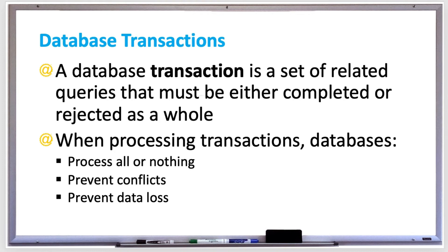It just disappeared into thin air. So to prevent incorrect data, the transaction either processes both of those queries if they're successful, or processes none of them at all if one of them should fail. When processing transactions, databases must process all or nothing.